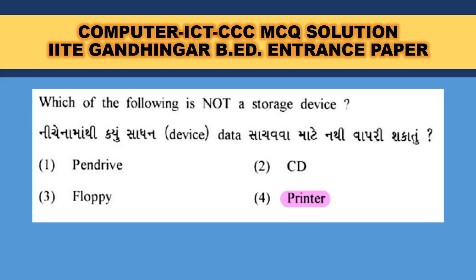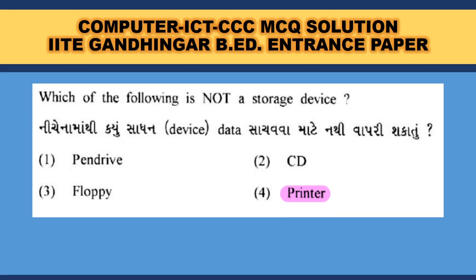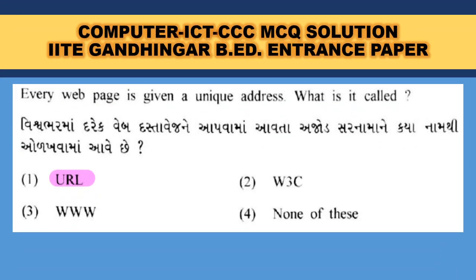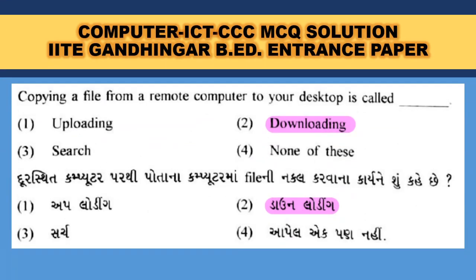Gujarat government's VPN is known as GISWAN — Gujarat State Wide Area Network. It is an advanced communication infrastructure. Every web page is given a unique address that is called a URL — Universal Resource Locator, or Uniform Resource Locator. URL is the correct answer.